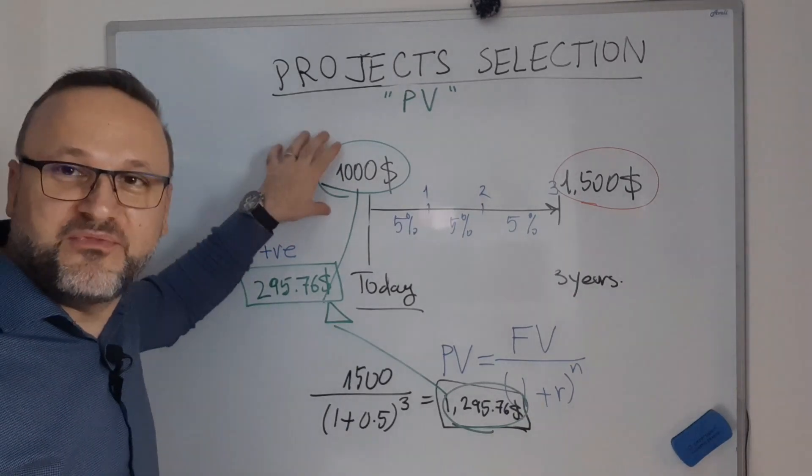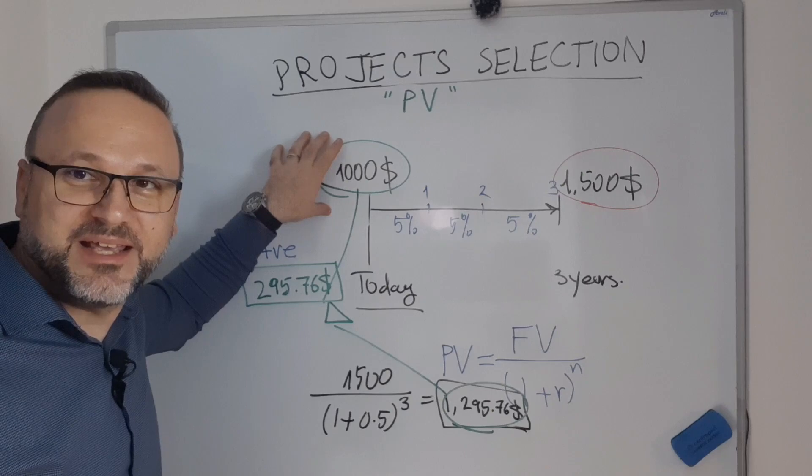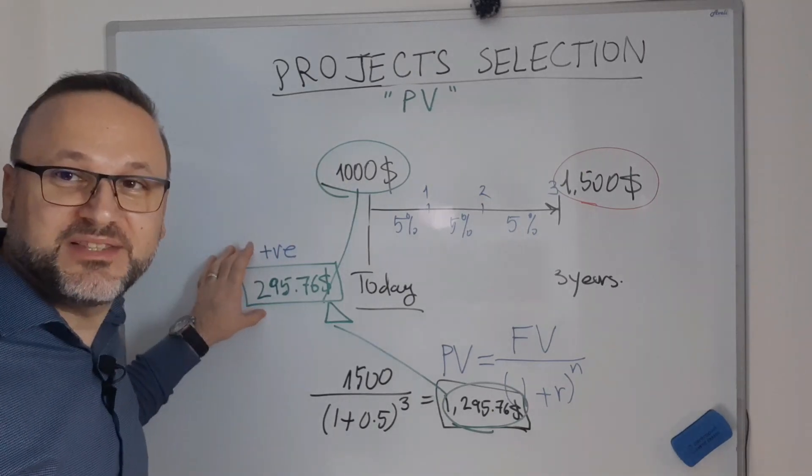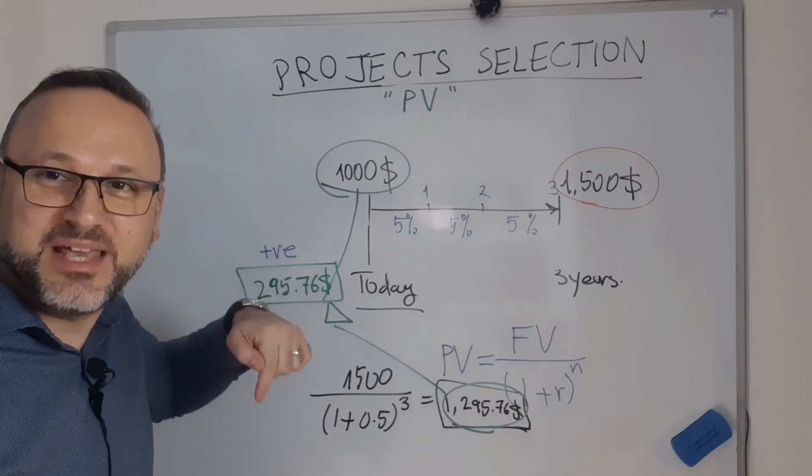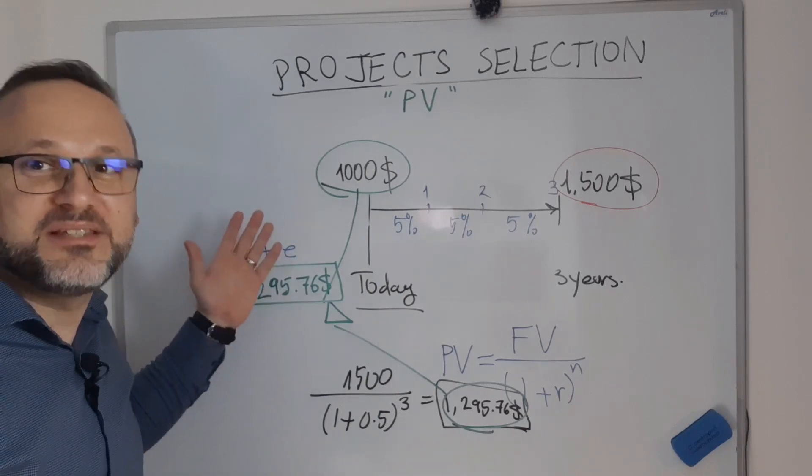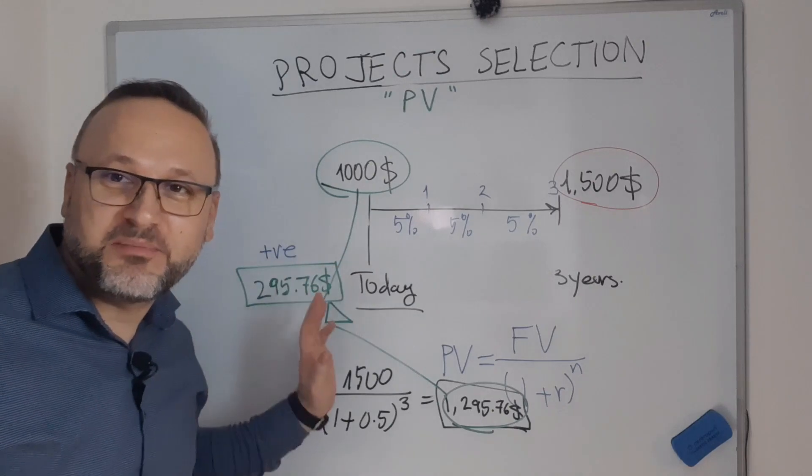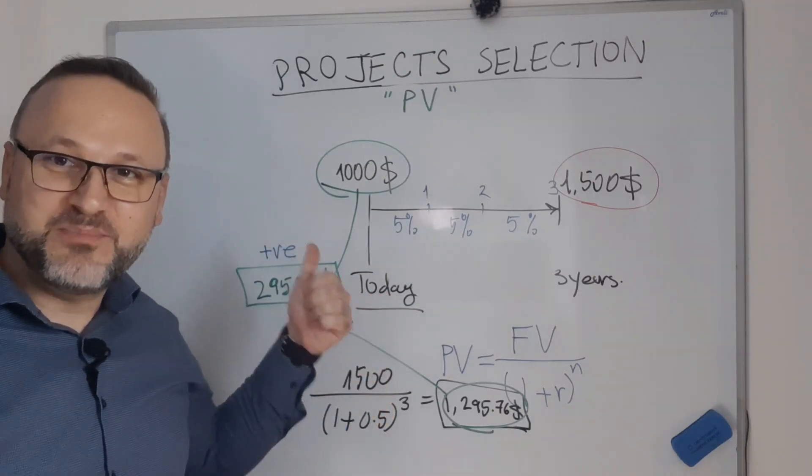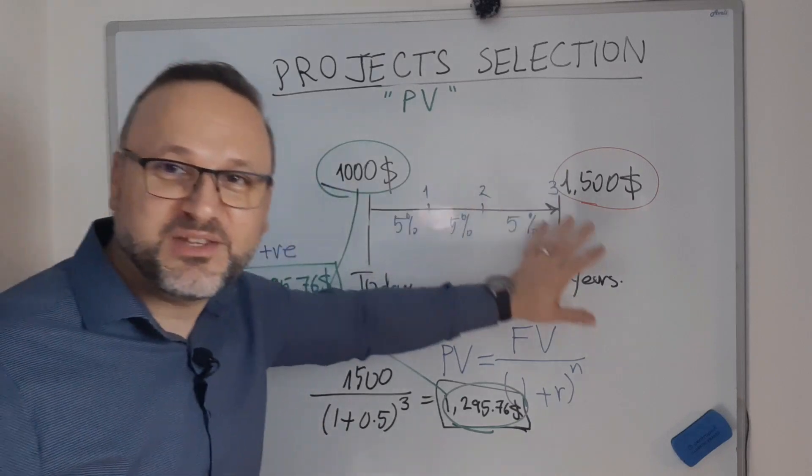So actually I am investing $1,000 today, but it's getting me $295 on the same date. So this is the present value calculation of the project. This is the first part of the project calculation. Be careful, always calculate it this way.